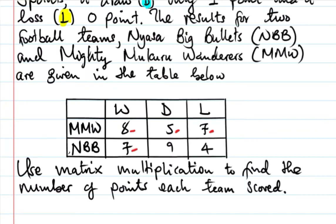NBB had 7 wins, 9 draws, and 4 losses. So MMW has 8 wins, 5 draws, 7 losses, and NBB has 7 wins, 9 draws, 4 losses. We should use matrix multiplication to find the number of points each team scored.